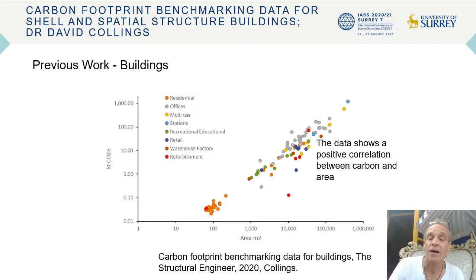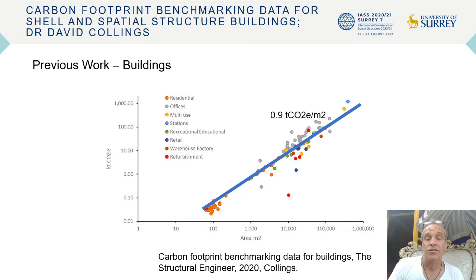Previous work: this is a plot from my 2020 paper in The Structural Engineer, and there's a clear positive correlation between carbon and area — the bigger we make things, the more carbon we put in. Generally the data was showing around 0.9 tonnes of carbon per square meter of building, but with significant variation.